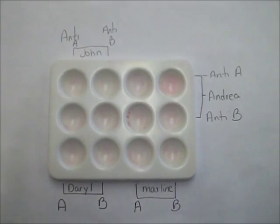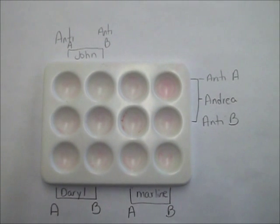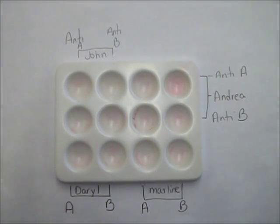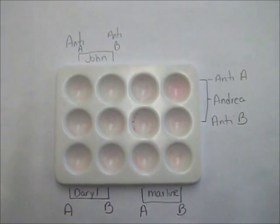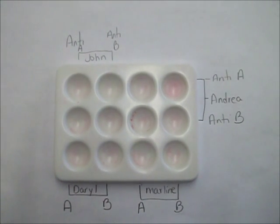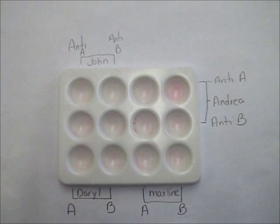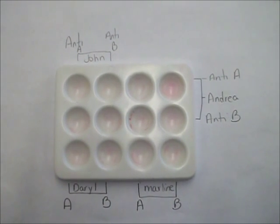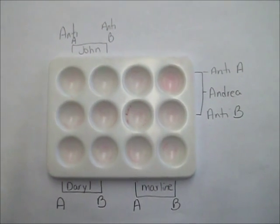We're now going to go into the lab and we're going to see how we figured out if Daryl is the son of Andrea and John. Now that we're in lab, the first thing we're going to do is set up the well plate to show each of the four people: John, Andrea, Daryl, and Marlene. I've indicated where I'm going to be adding anti-A and anti-B.